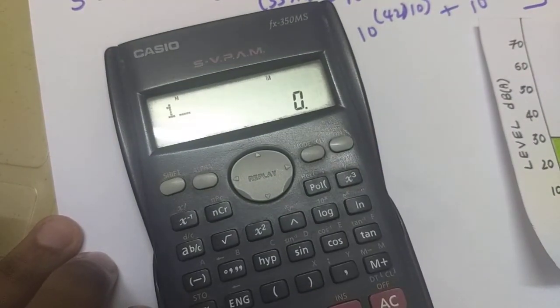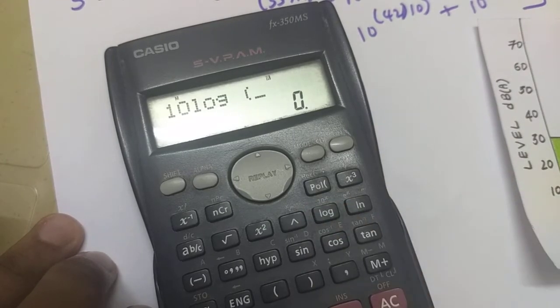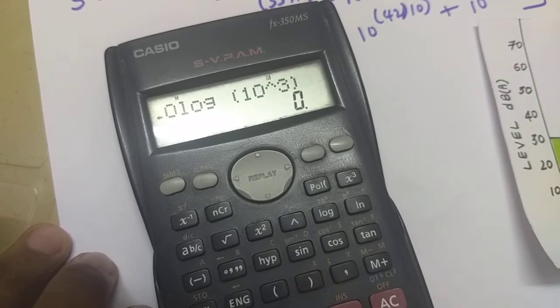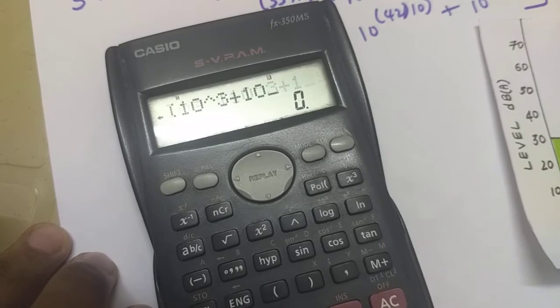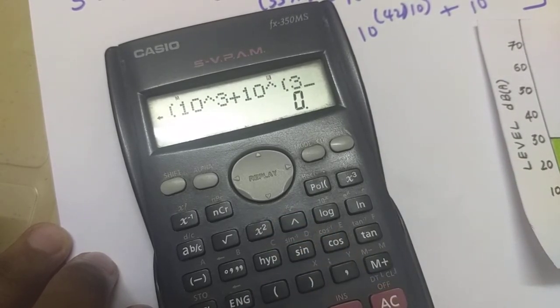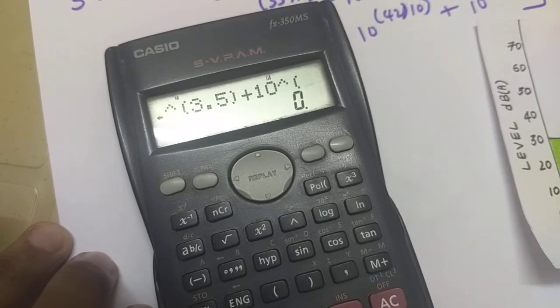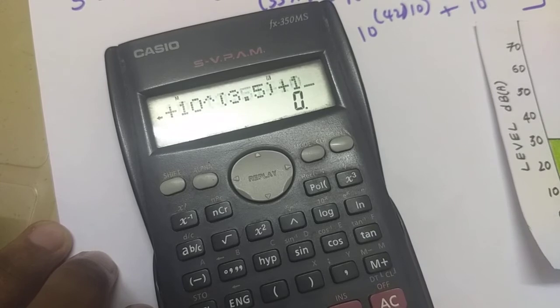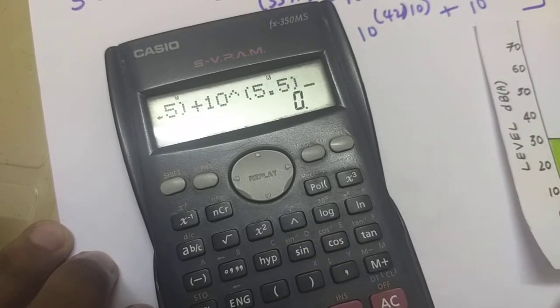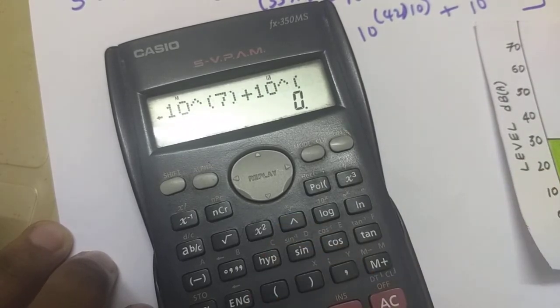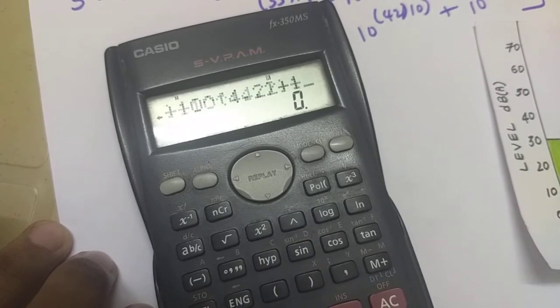So it is 10 multiplied by log to the base 10 of 10 power 30 by 10 which is nothing but 3 plus 10 power 35 by 10 plus 10 power 40 by 10 so 4 plus 10 power 3.5 plus 10 power 5.5 plus 10 power 7 plus 10 power 5 plus 10 power 4.2 plus 10 power 2.6.